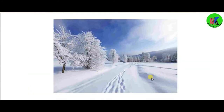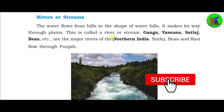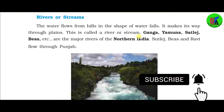Here is a picture of snow-covered areas. Water flows from hills in the shape of waterfalls. It makes its way through plains and this is called a river or stream.